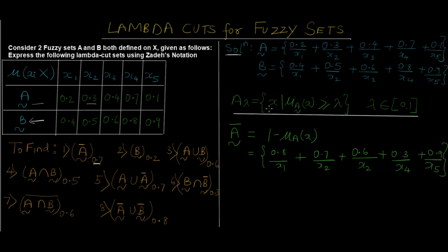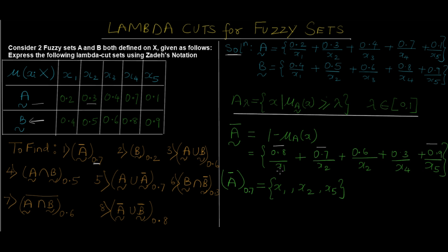Now applying the lambda cut value of 0.7, we find all values greater than or equal to 0.7: 0.8, 0.7, and 0.9 qualify. So the final answer — A complement at lambda 0.7 — is the crisp set {X1, X2, X5}. We just took the denominators for all numerators whose value is greater than or equal to 0.7. This is a crisp set, so we don't use the tilde sign.